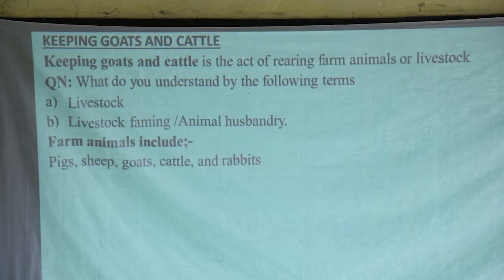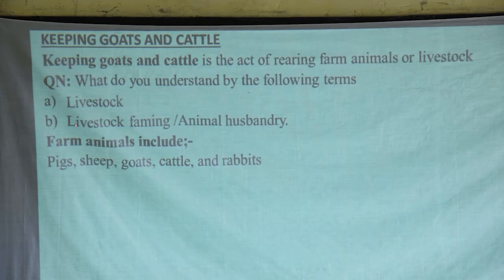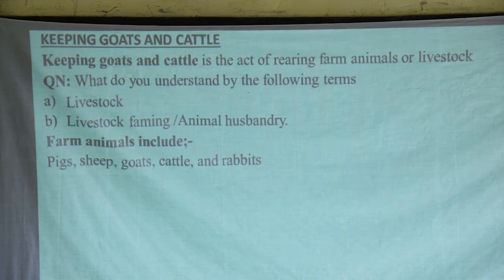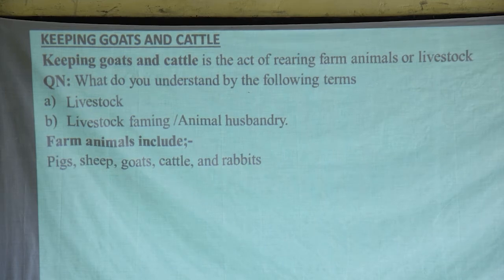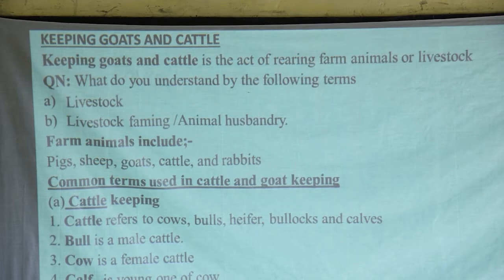If they ask you to mention examples of farm animals, simply mention any example: cattle, cows, bulls, goats, sheep. Livestock farming can also be called animal husbandry. Livestock farming is the act of rearing animals — it can be for domestic purposes or for commercial purposes. Farm animals may include pigs, sheep, goats, cattle, and rabbits. For this time, we are purposely looking at goats and cattle.